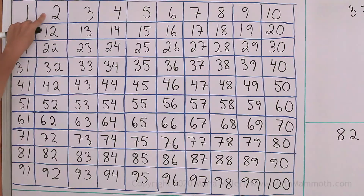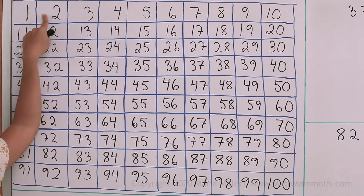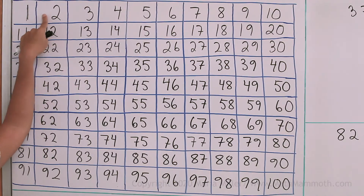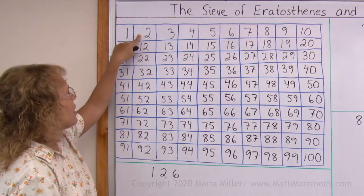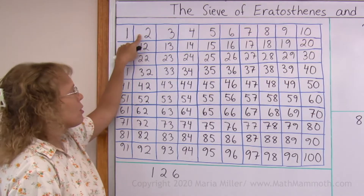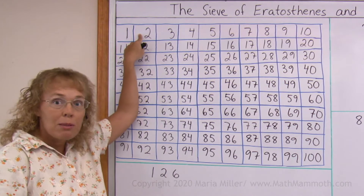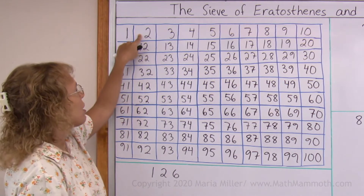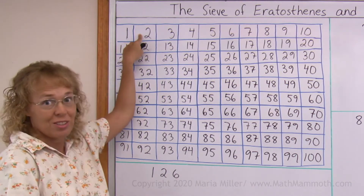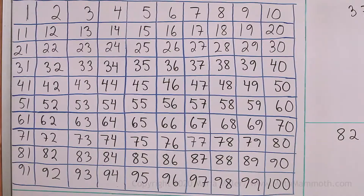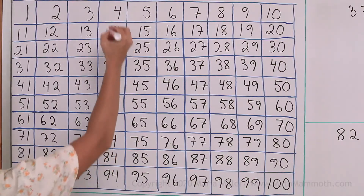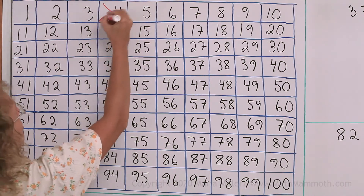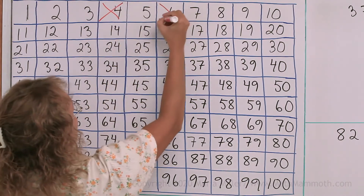I'll start here with the number 2. 2 is prime, but I want to cross out all the multiples of 2 — all the even numbers — because they cannot be primes. So I'll just cross out all the even numbers.